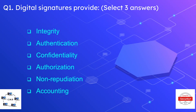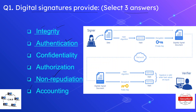Question number one is that digital signatures provide — we have to select three correct answers. The options are Integrity, Authentication, Confidentiality, Authorization, Non-Repudiation, and Accounting. The correct options are Integrity, Authentication, and Non-Repudiation.